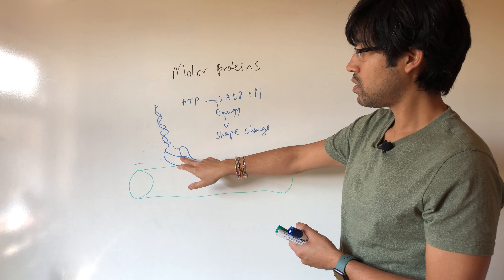So intracellular transport: motor proteins plus microtubules plus any cargo gives you transport toward the outer part or inner part of the cell. Now let's look at chromosome segregation — what happens at the time of cell division that results in the sister chromatids being separated equally during mitosis or meiosis.